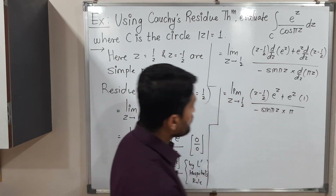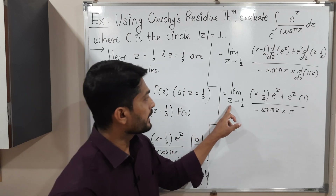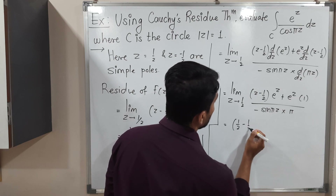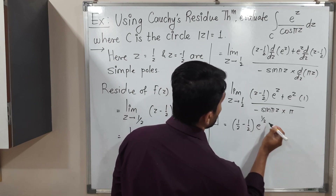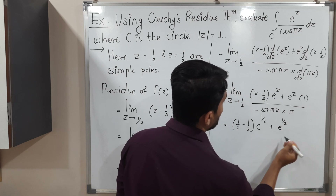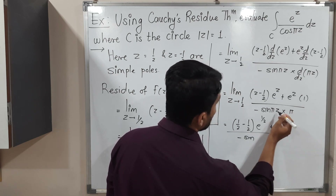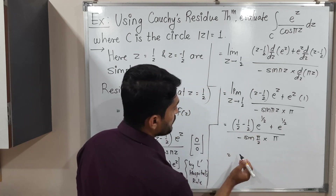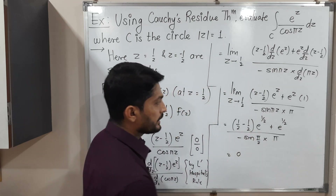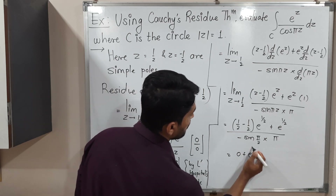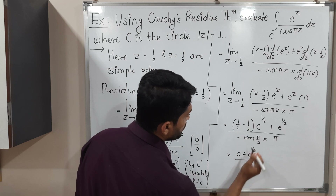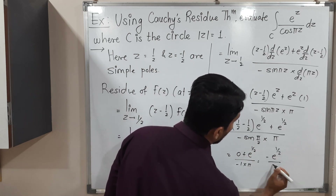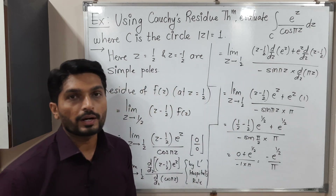Now we apply the limit by substituting Z = 1/2. The term (1/2 - 1/2) · e^(1/2) gives 0, plus e^(1/2) · 1 = e^(1/2) in the numerator. In the denominator, -sin(π/2) · π = -1 · π = -π. So the residue at Z = 1/2 is e^(1/2) / (-π) = -e^(1/2) / π.